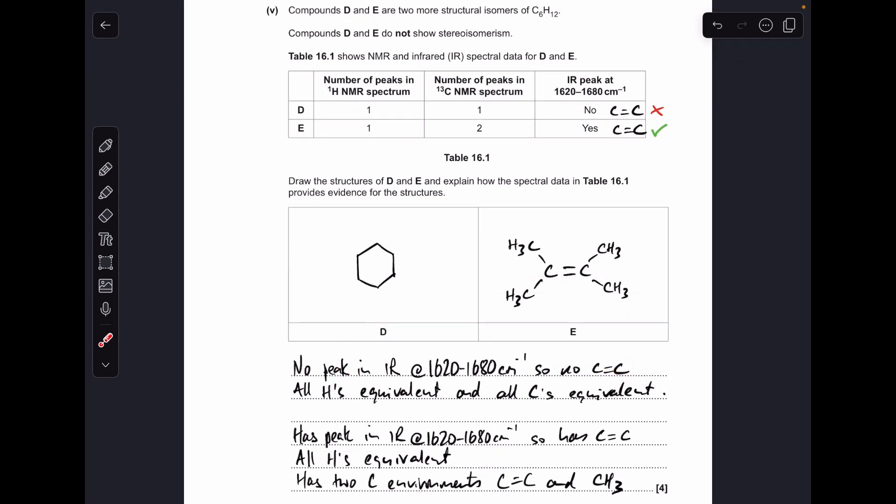Moving on to the next part, I hope you can still see everything. I've just zoomed out a little bit. So we've got no peak between 1620 and 1680 for D, so it doesn't have a carbon-carbon double bond, whereas E does. So D must be this, cyclohexane, and that's what I would write there. So there's my information about the lack of a carbon-carbon double bond. And the hydrogens are all equivalent, and so are all the carbons.